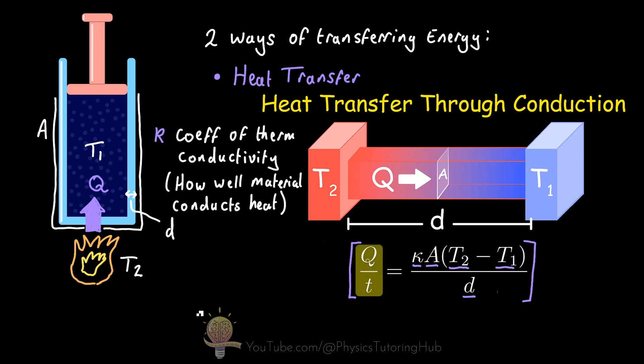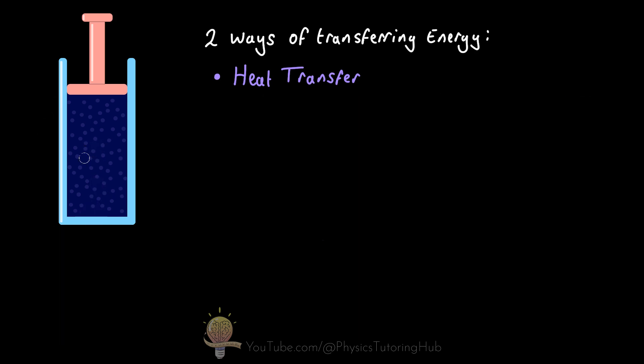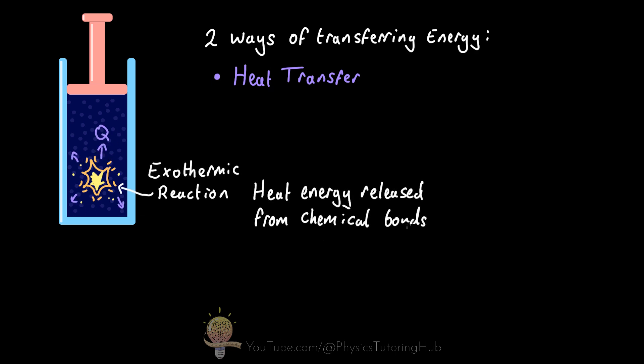But this rate of heat transfer is rather slow in this example. A faster way we could transfer heat into this gas is through a chemical reaction, or more specifically, an exothermic reaction. So as a result, the gas within the chamber rapidly increases in pressure, and this can be used to do work, for example, by pushing the piston here.